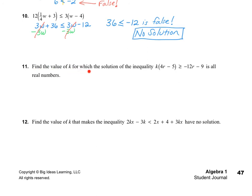Number 11 says find the value of k for which the solution of the inequality is all real numbers. I notice that k is being multiplied by the quantity of 4r minus 5. Since the whole thing is being multiplied, I can divide 4r minus 5 on both sides. The 4r minus 5s cancel as a whole group, and I end up with k greater than or equal to negative 12r minus 9 all over 4r minus 5. And that will give us all real solutions.